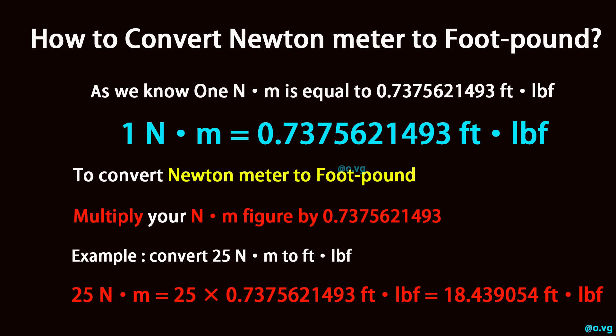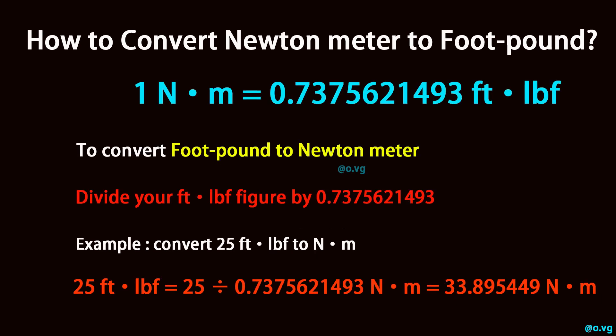To convert newton-meter to foot-pound, multiply your newton-meter figure by 0.7375621493. Example: convert 25 newton-meter to foot-pound. 25 newton-meter is equal to 25 times 0.7375621493, which equals 18.439054 foot-pound. To convert foot-pound to newton-meter,